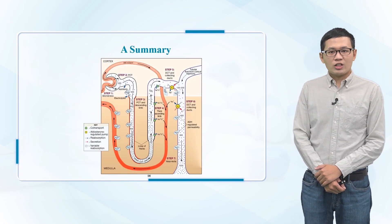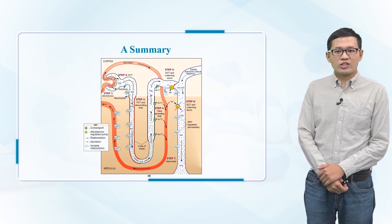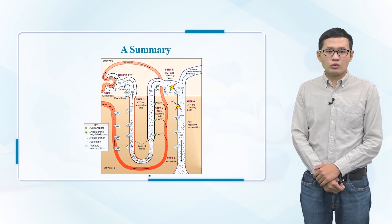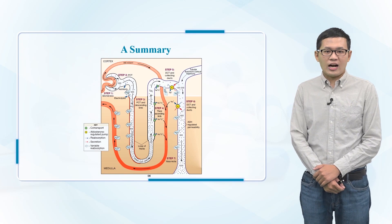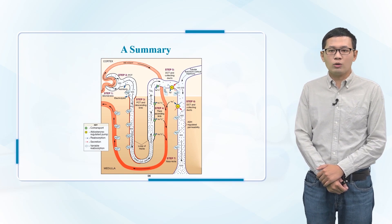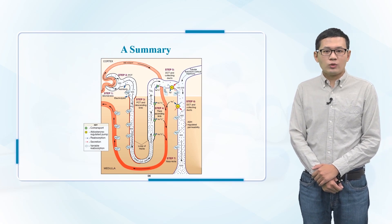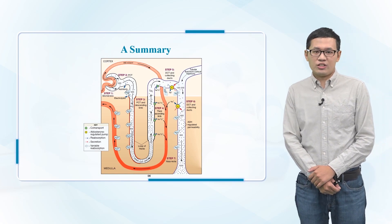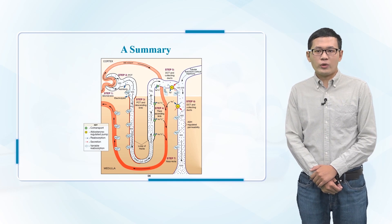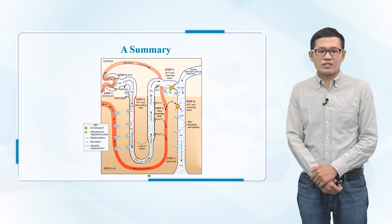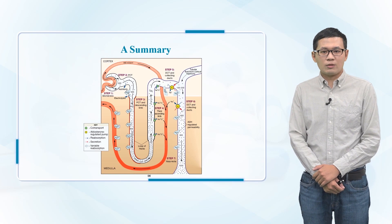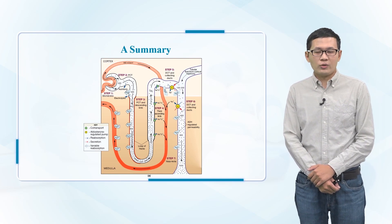The major factors that contribute to the build-up of solute concentration in the renal medulla are as follows: active transport of sodium ions and co-transport of potassium, chloride, and other ions out of the thick portion of the ascending limb of the loop of Henle into the medullary interstitial; active transport of ions from the collecting ducts into the interstitial; facilitated diffusion of urea from the inner medullary collecting ducts into the medullary interstitial; and diffusion of only small amounts of water from the medullary tubulars into the interstitial, far less than the resorption of solutes into the medullary interstitial.